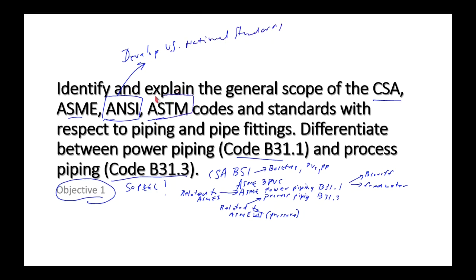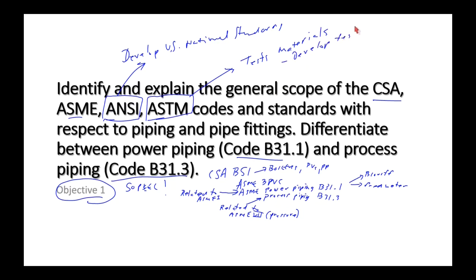As for the ASTM, it does not make codes — ASTM tests materials. That's why they're called the American Society for Testing of Materials. They develop tests, material specifications, and procedures. There are no ASTM codes — there are ASTM procedures and ASTM material specifications.